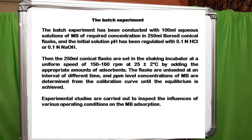Next are the batch experiments. The batch study was conducted by taking 100 ml methylene blue solutions of known strength in 250 ml conical flasks. The pH of the solution was adjusted with 0.1 normal HCl or 0.1 normal NaOH, and the required quantities of adsorbent were added.